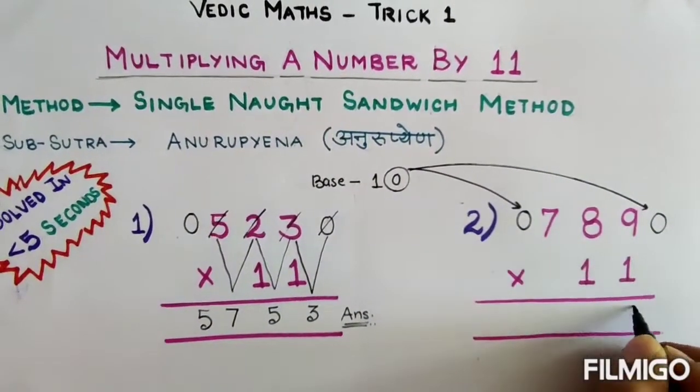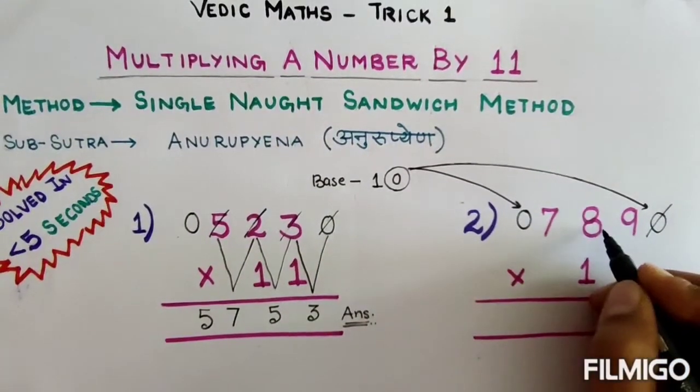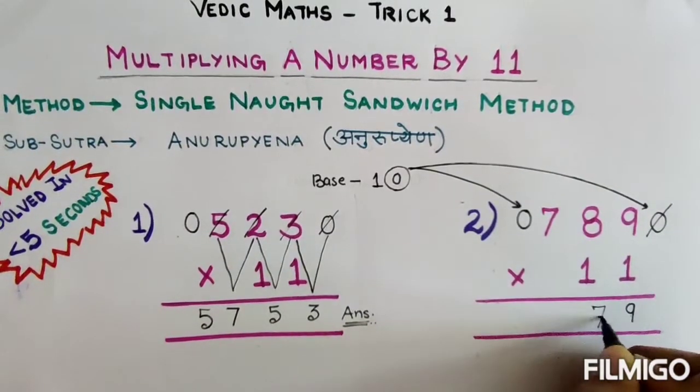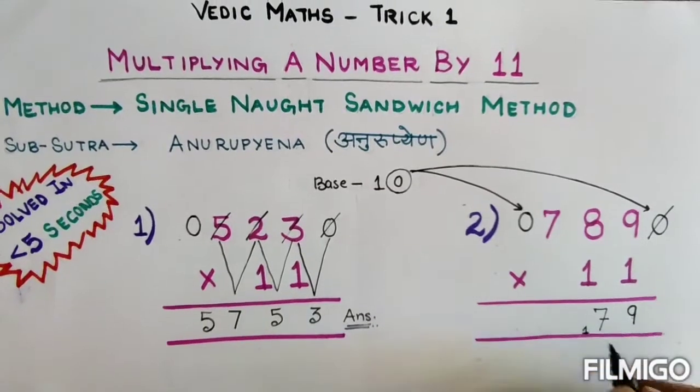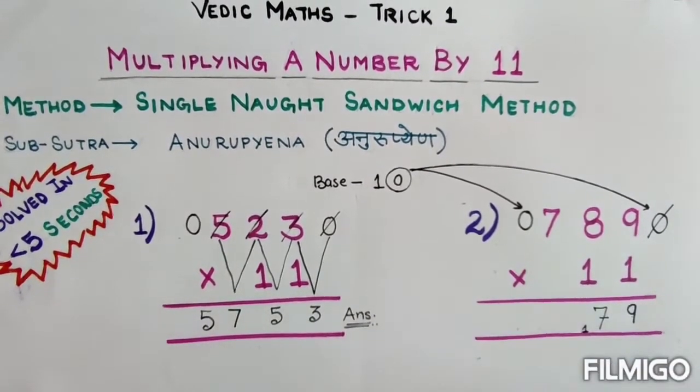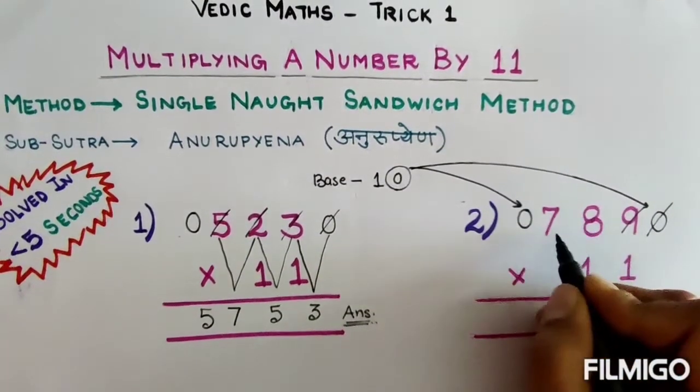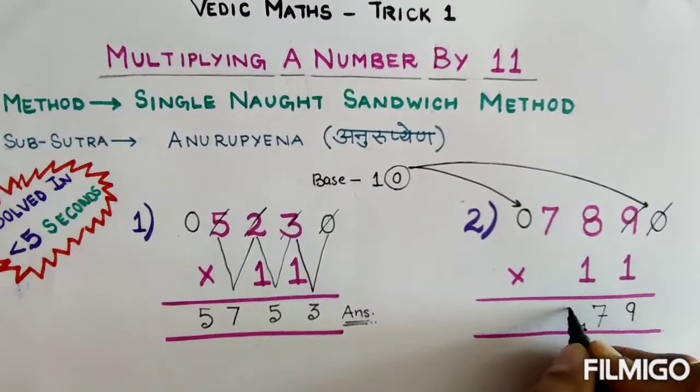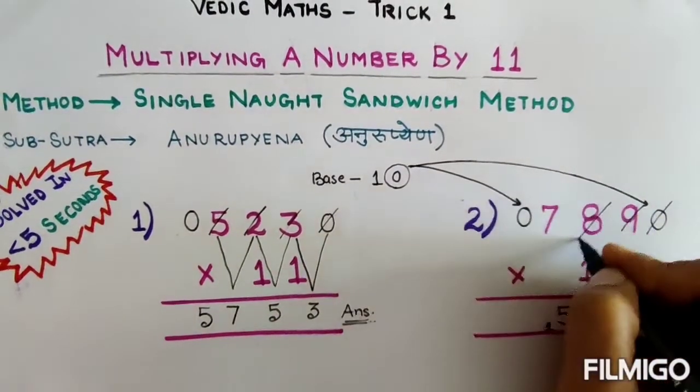0 plus 9 is 9, cross this. 9 plus 8 is 17, so I will write 7 here and at the foot of 7 I will write 1 here. Then cross this 9. 8 plus 7 is 15, so I will write 5 here and 1 at the foot. I will cross this 8.